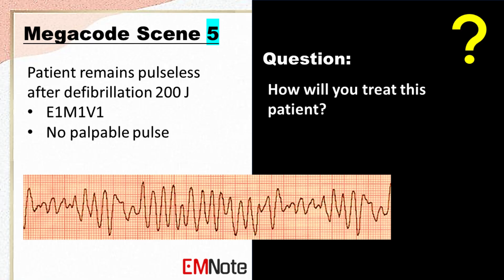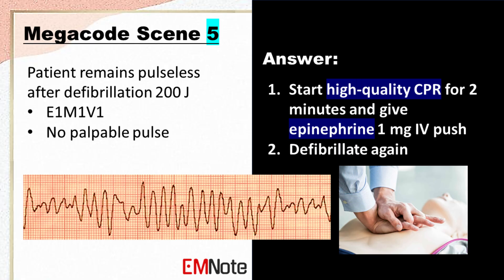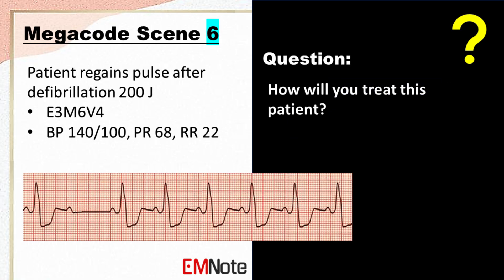The patient remains pulseless and unconscious after defibrillation with 200 joules. The ECG monitor shows that the patient is still in VF. Start high-quality CPR for two minutes and push epinephrine 1 milligram intravenously every three to five minutes. Continue CPR and defibrillation attempts until ROSC — return of spontaneous circulation — is achieved.